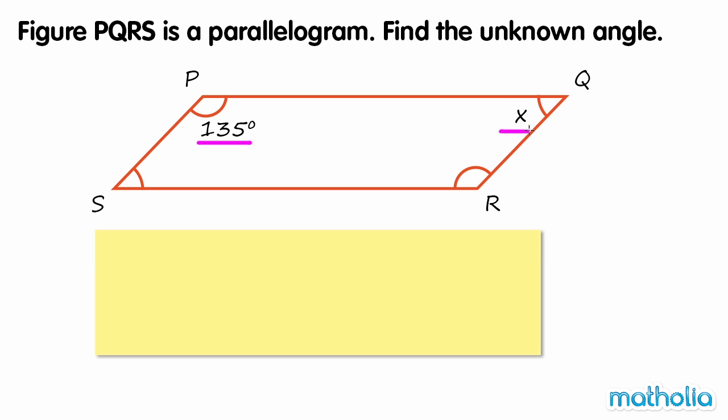This angle pair has a sum of 180 degrees. So angle X equals 180 degrees minus 135 degrees, which equals 45 degrees. So the unknown angle is 45 degrees.